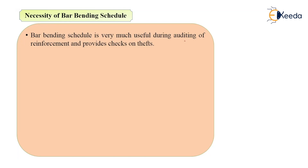Bar bending schedule is very useful during the auditing of reinforcement and provides checks on thefts. If you find that the steel reinforcement brought to the site is less than the ordered quantity, there are chances that theft has occurred. You can prepare proper auditing of the reinforcement because it gives you an idea of whether the quantity placed matches the quantity ordered, and that can be verified by the supervisor.